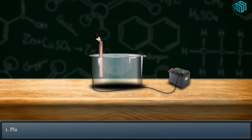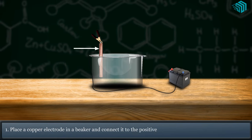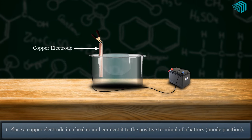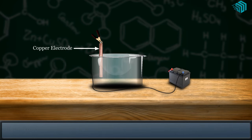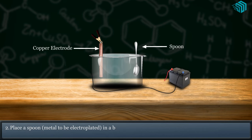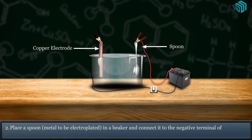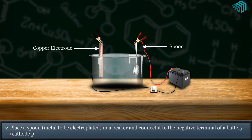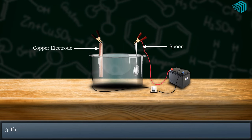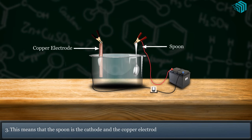Place a copper electrode in a beaker and connect it to the positive terminal of a battery, which is the anode position. Place a spoon, the metal to be electroplated, in the beaker and connect it to the negative terminal, which is the cathode position. This means the spoon is the cathode and the copper electrode is the anode.